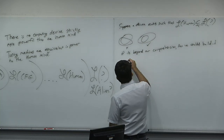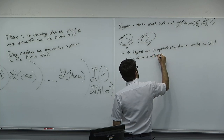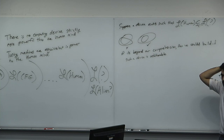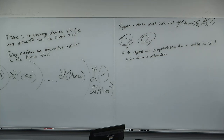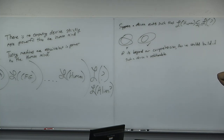We can't really finish a proof of point one, because we can't think about what we can't think about. But we can reason about why we can't finish the proof, and that's sufficient for closure. Even if such a device did exist in a way that was beyond our comprehension, it doesn't make sense to discuss it — it's like an agnostic god. It does something, but not in a way that affects us. Point one is sufficiently argued: there is no computing device strictly more powerful than the human mind.